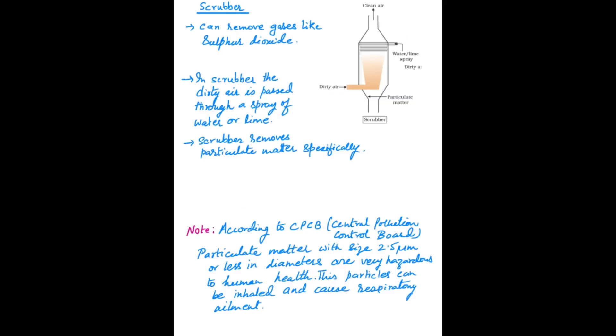Now come to the scrubber. In scrubber, the dirty air passes through a spray of water or lime instead of electricity electrodes as in the case of electrostatic precipitator. When dirty air passes through water or lime, the particulate matter settles there and clean air is released. This is the mechanism through which scrubber cleans the dirty air.